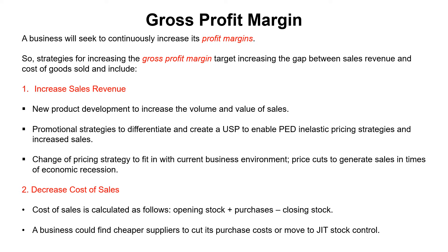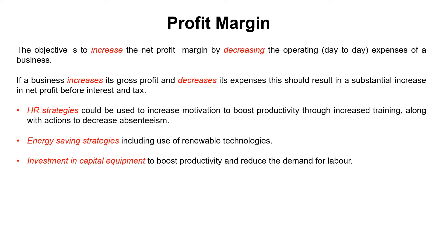Stock control systems are also important. Just-in-case is where you have stock sitting on the shelf to cover eventualities. Just-in-time is where you have daily deliveries — you keep no or minimal stock, which is used up the next day. This rapidly reduces your costs, so when looking at your profit margin, think about how you can improve it using stock control methods.